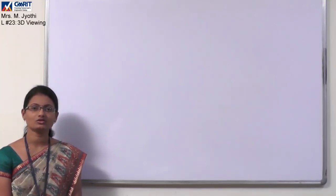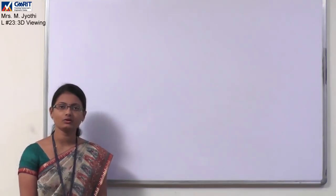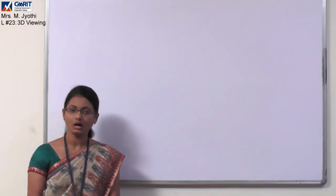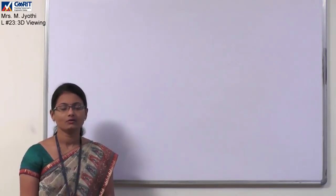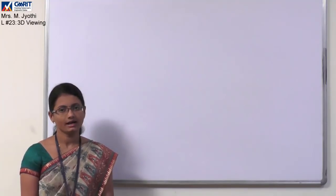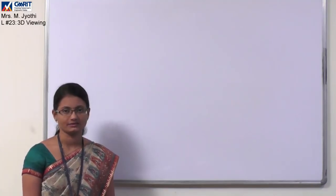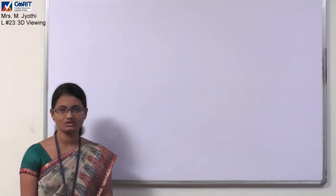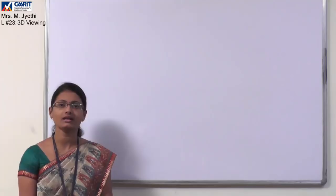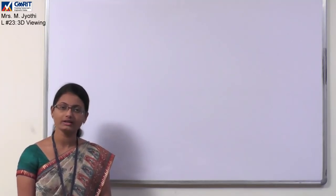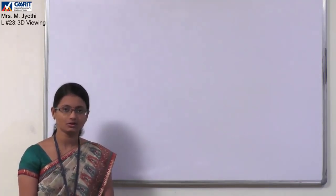Hello everyone, welcome to the video course on computer graphics. We are discussing about 3D objects. In my last video I explained how 3D objects can be represented — including polygon surfaces, quadric surfaces, and curve representation such as Bezier curves. We also discussed 3D transformations including translation, rotation, scaling, reflection, and shear transformations. Now let us move to the next concept.